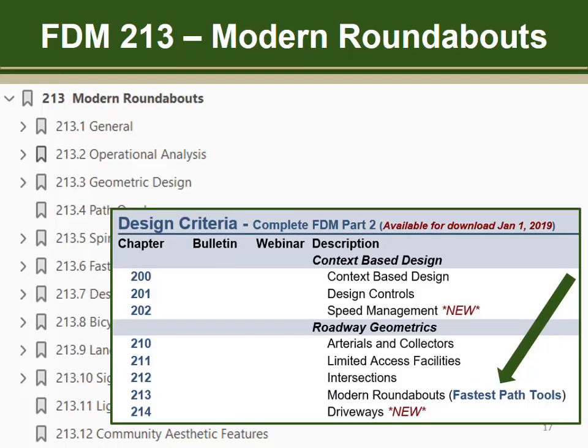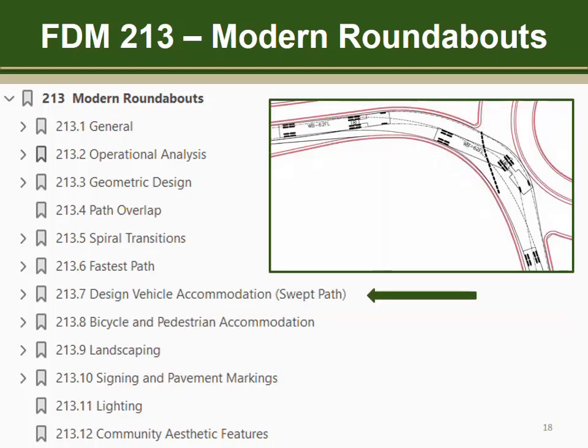A CAD-based procedure for conducting fastest path analysis has been adopted by the department. A link to the fastest path tools is provided on the FDM webpage. Swept path diagrams are typically generated using AutoTurn, a CAD-based vehicle turning program. Swept path diagrams assure that there is adequate pavement to keep the design vehicle on the pavement and off of the curb.